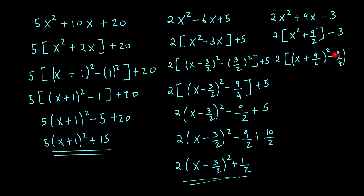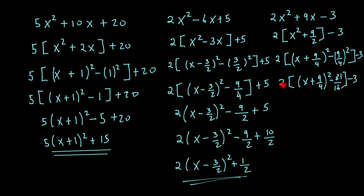Minus 9 over 4 all squared, that would be minus 3. So then the next line would be x plus 9 over 4 all squared, and then if I square that, that's 81, so that's minus 81 over 16, minus 3. Now what I'm going to do is bring my 2 in, so that would be 2 times x plus 9 over 4 all squared, and that would be minus 81 over 8 minus 3.